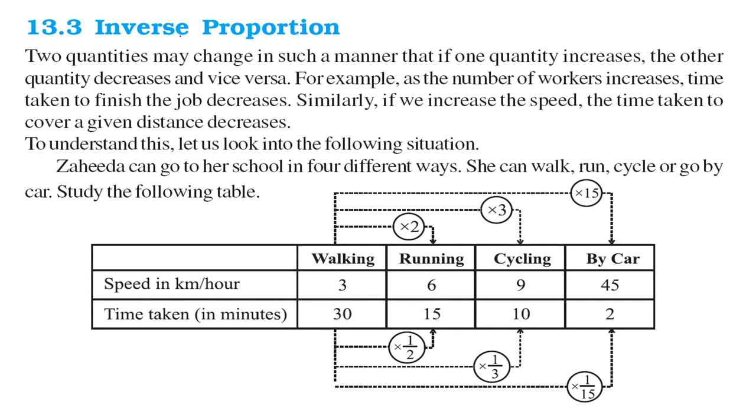Inverse Proportion. Now when we change one quantity and the other quantity decreases. Direct Proportion is when one quantity increases, the other quantity also increases. But in inverse proportion, one quantity increases, the other quantity decreases.